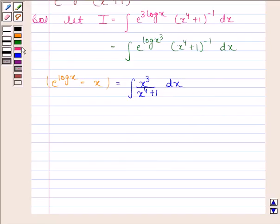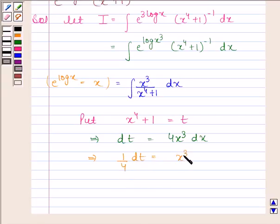Now we are going to put x to the power 4 plus 1 as t. This implies dt is equal to 4x cube dx. This implies 1 by 4 into dt is equal to x cube dx.